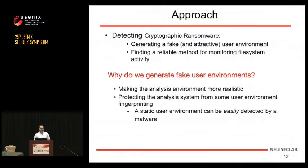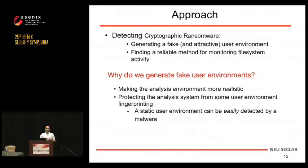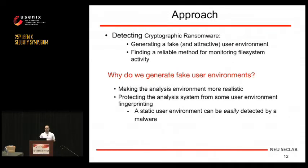To detect ransomware, we address two classes: cryptographic ransomware that attacks user files, and desktop blockers that simply lock the desktop. In order to detect cryptographic ransomware, we generate a fake but attractive environment for the malware to run in, then sit in the kernel and observe the interaction of the process with the file system. The question is: why do we generate a fake user environment?